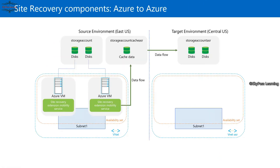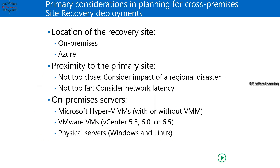There are some considerations when planning for cross-premises or site recovery deployments. You need to consider primary site location, regional disasters, and network latency. For on-premises servers, you must have Hyper-V with or without VMM. You can also use VMware as well as physical boxes. These are the supported structures if you are going to perform Azure and on-premises replication as well as disaster recovery.